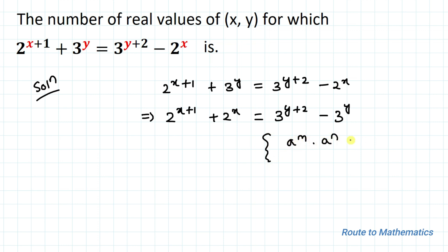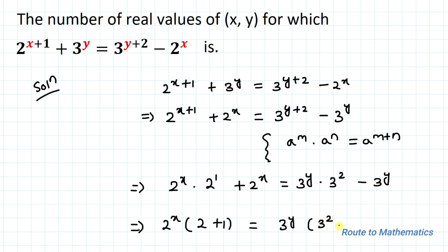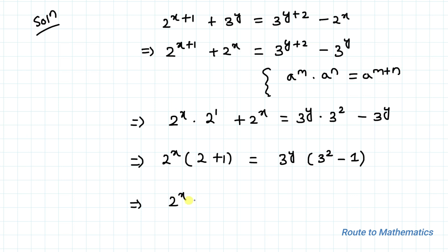We have an exponential rule: a to the power m multiplied by a to the power n equals a to the power m plus n — when we have the same base, the powers get added. Applying this rule, the left side becomes 2 to the power x multiplied by 2 to the power 1, plus 2 to the power x. Taking 2 to the power x as common: 2 to the power x times (2 plus 1). On the right, taking 3 to the power y as common: 3 to the power y times (3 to the power 2 minus 1), which gives 3 to the power x times 3, equal to 3 to the power y times 8.